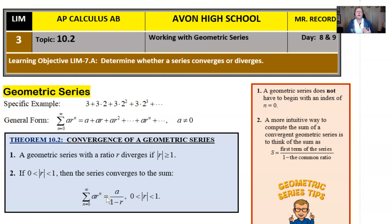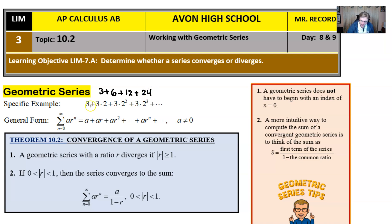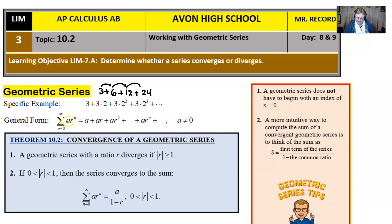Let's revisit what a geometric series is. We talked about it just a little bit in topic 10.1, but a very specific example might look like what I've got here. I could simplify this and present it as 3 plus 6 plus 12 plus 24. We're just multiplying by 2 each time, which you can see broken down as 3 plus 3 times 2 to the first plus 3 times 2 to the second, etc. That's when you know you have a geometric series — you can write it as a summation where you take a and multiply by r raised to the nth power.